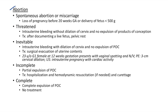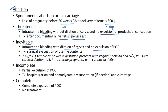Spontaneous abortion or miscarriage is loss of pregnancy before 20 weeks gestational age or delivery of a fetus <500 grams (before viability). In India, it is before 28 weeks or <1 kg. Types of abortion: Threatened abortion — intrauterine bleeding without dilatation of cervix and no expulsion of products of conception. Management: after documenting fetal viability, advise pelvic rest. Inevitable abortion — intrauterine bleeding with dilatation of cervix and no expulsion; treatment is surgical evacuation of uterine contents.